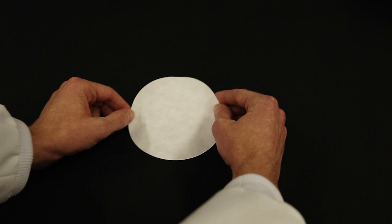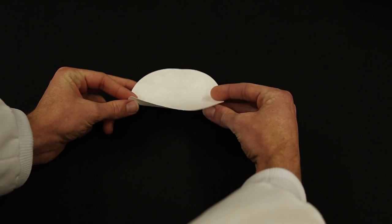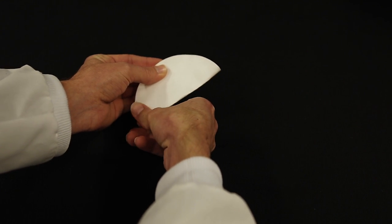Before beginning, pleat a filter paper for recrystallization. Take a piece of filter paper and fold it in half. Make a sharp crease.